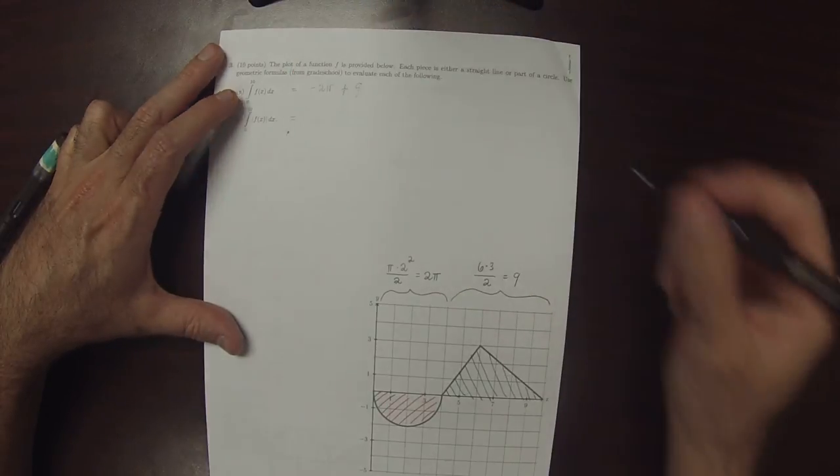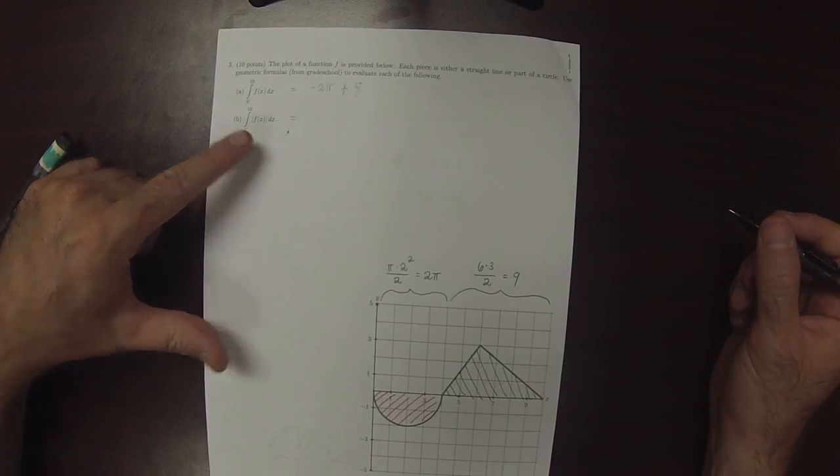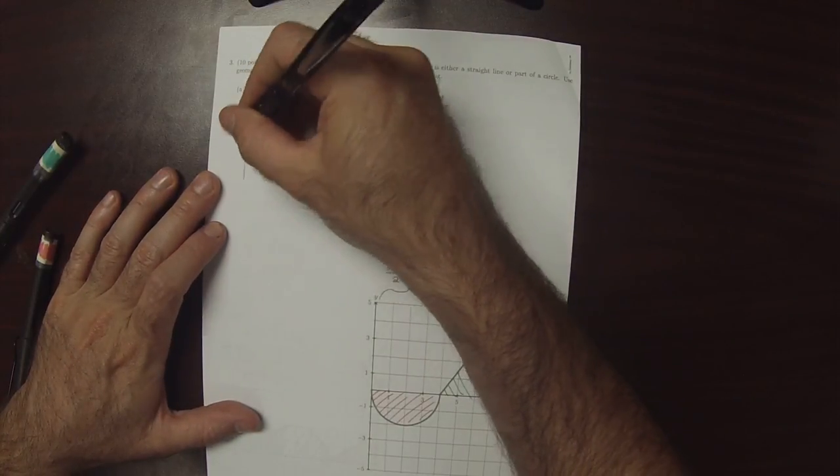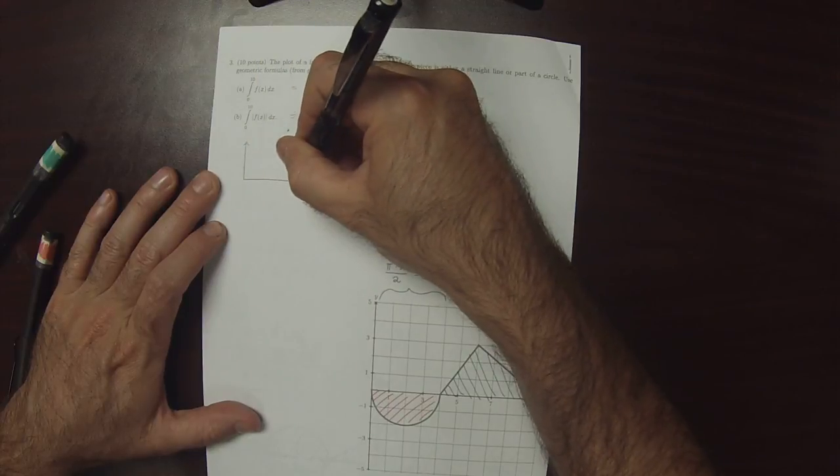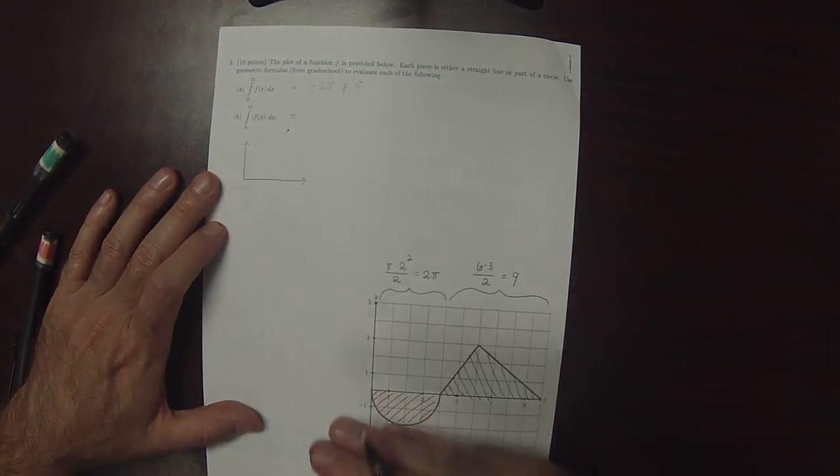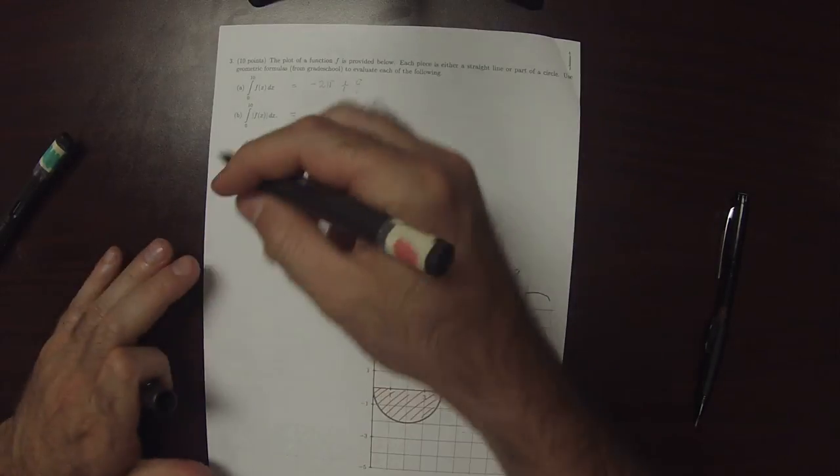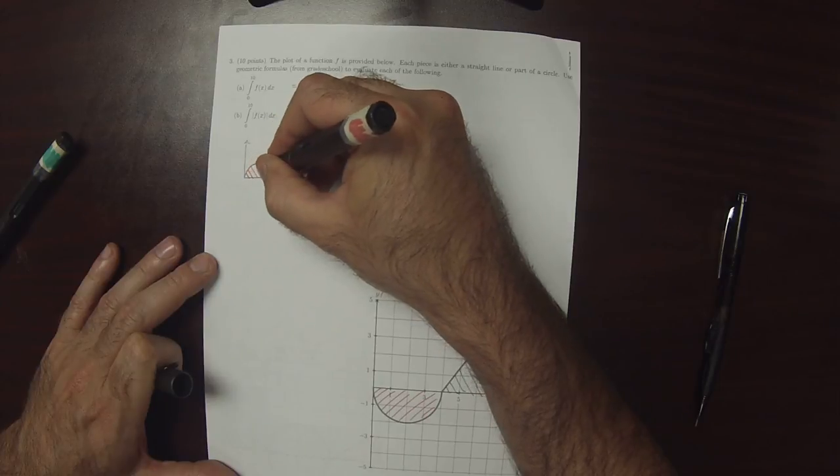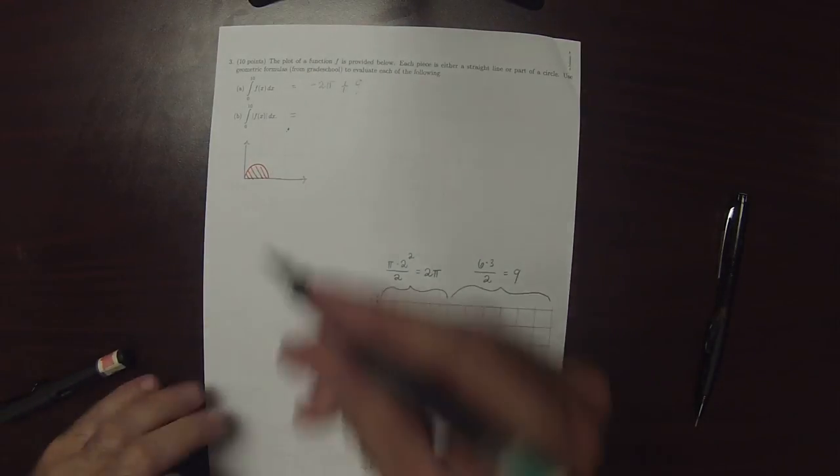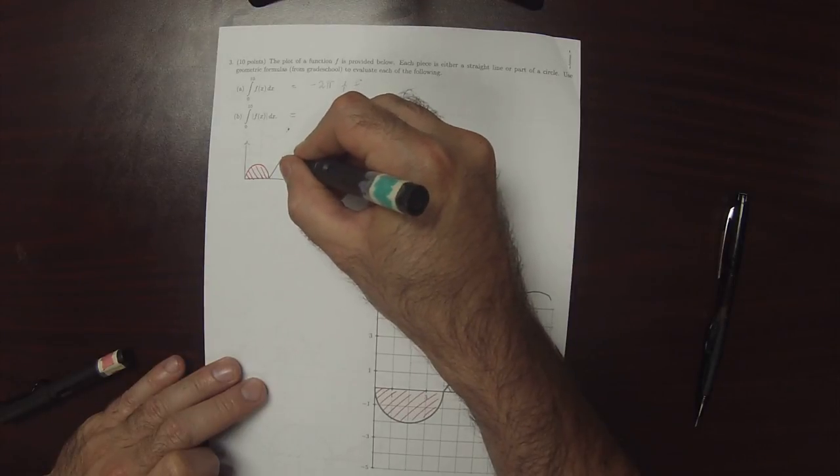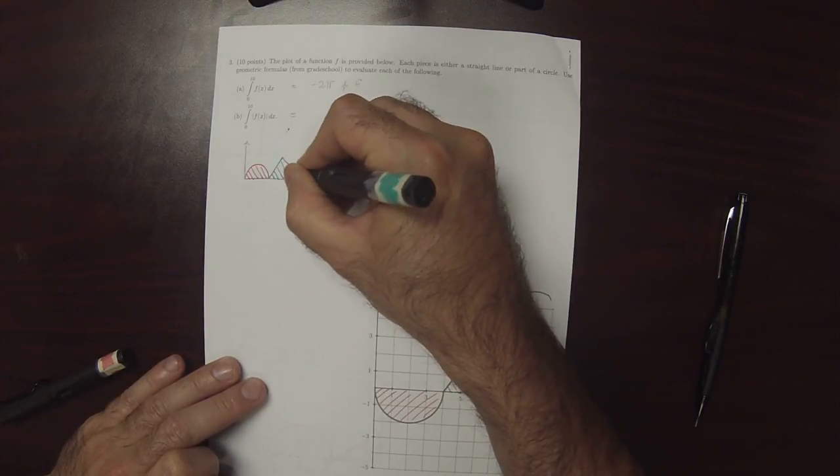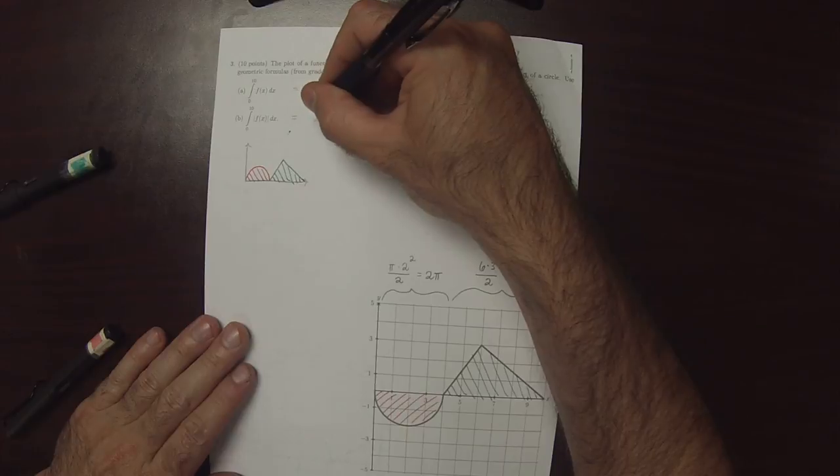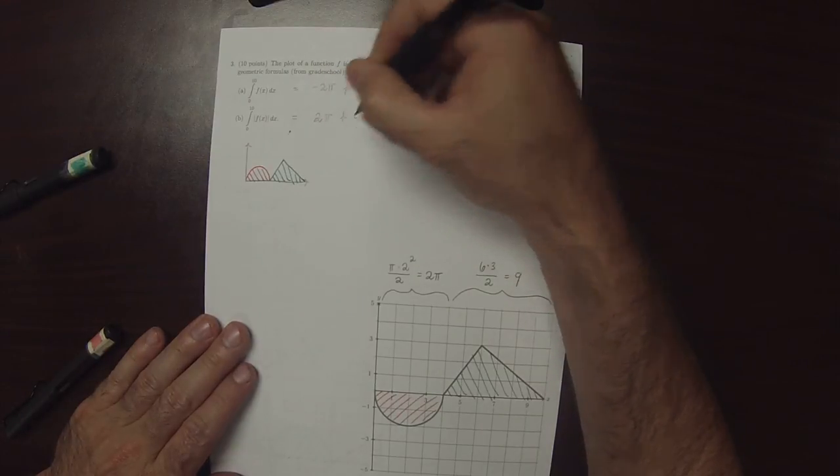So, as for the second evaluation. Now, what the absolute value does in the plot, just to make a rough sketch, is it flips all of the negative parts to become positive parts. So, the new plot looks something like this. So, that both areas are reckoned as positive. So, the answer is 2 pi plus 9.